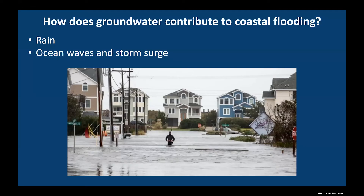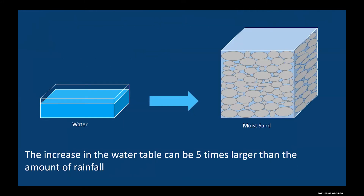There are two key components to how groundwater contributes to flooding. The first process is rainfall and the second is ocean waves and storm surge. In a coastal aquifer, the increase in the water table owing to contributions from rain can be up to five times larger than the amount of rainfall received across the island, because as the water infiltrates into the aquifer, it can only fill space not already taken up by sand.